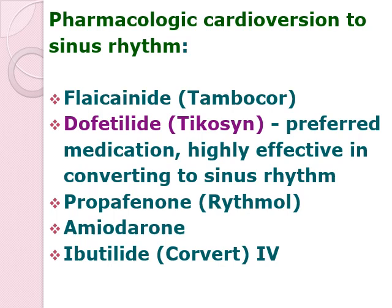To summarize, you have three atrial problems. One is your premature atrial contractions — as the term implies, there is emergence of atrial contractions before the normal one should occur. Then you have your atrial flutter, which is characterized by sawtooth appearance and is more organized. And then you have your atrial fibrillation, which is disorganized. These are your dysrhythmias which originate from your atrium or atrioventricular node. Thank you very much for your attention.